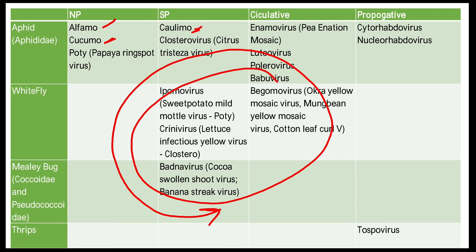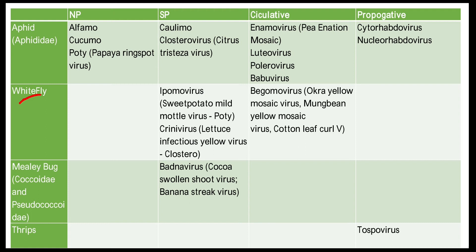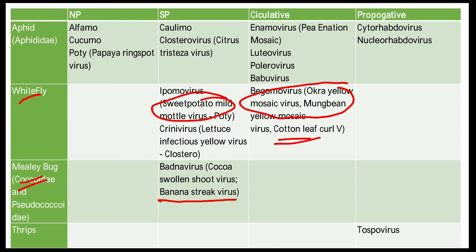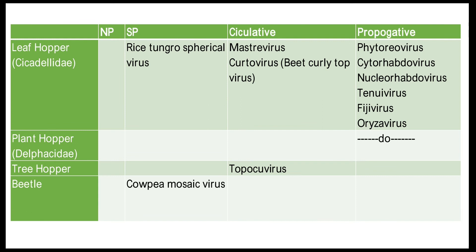Whitefly — in semi-persistent manner: sweet potato mild mottle virus; in circulative manner: okra yellow mosaic virus, mung bean yellow mosaic virus, and cotton leaf curl. Mealybug — banana streak virus. Thrips — tomato spotted wilt virus. Leafhopper — rice tungro spherical virus. Planthopper — Tenuivirus, Fijivirus, Phytoreovirus (these are genus names). Treehopper — Topocuvirus or tomato pseudo curly top virus. Beetle — cowpea mosaic virus.